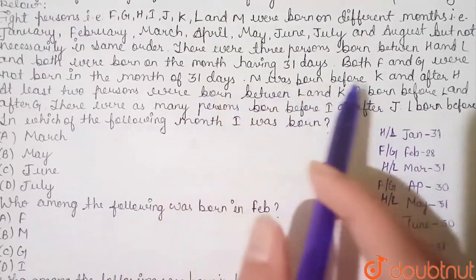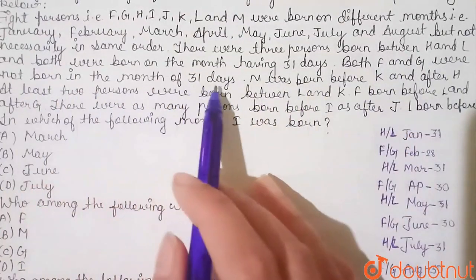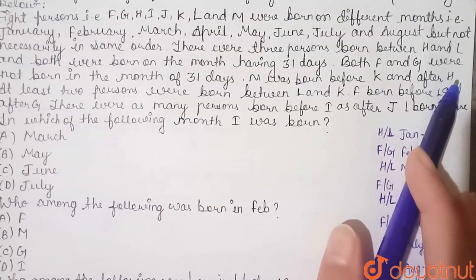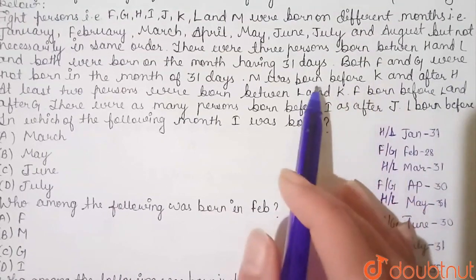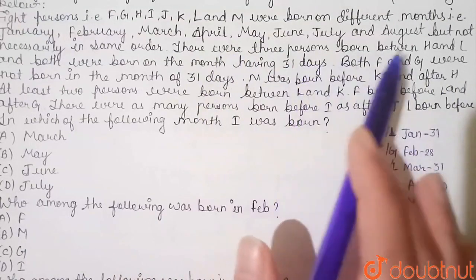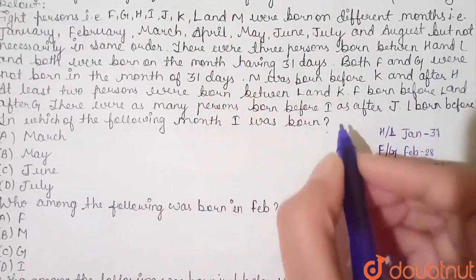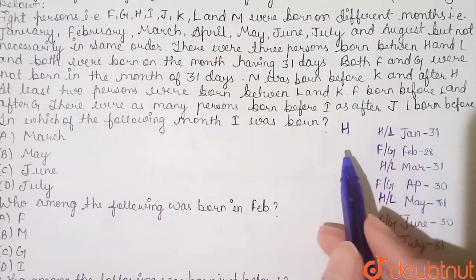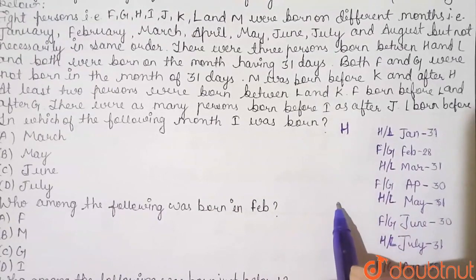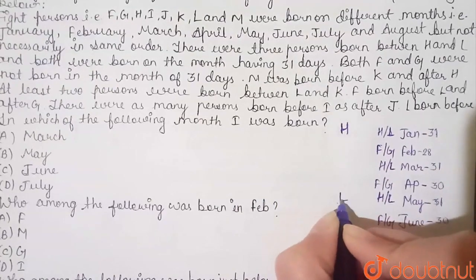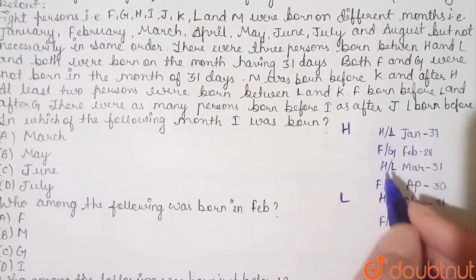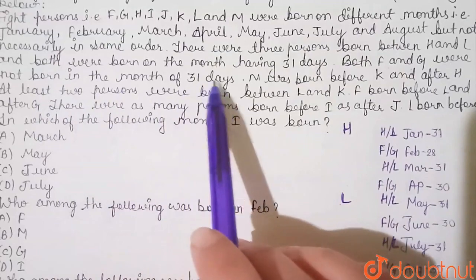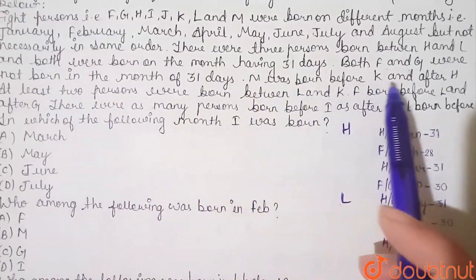Both H and L were born in a month of 31 days. M was born before K and after H. So the order is H … M … K. F is born before L and after G, giving us G … F … L. At least 2 persons were born before L and K.